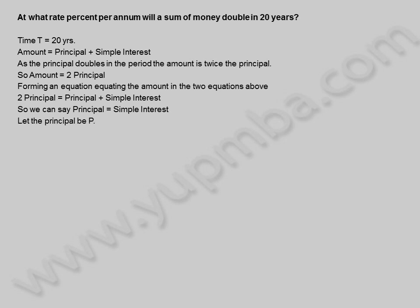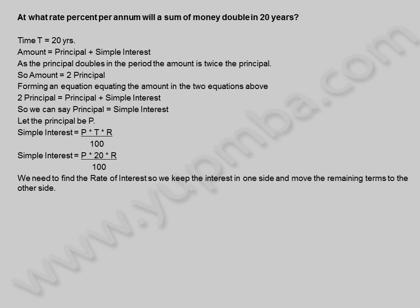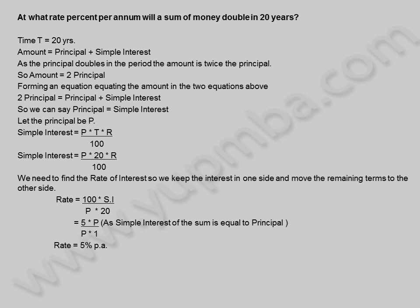Let the principle be P. Simple interest is equal to principle into time into rate percent divided by 100. We need to find the rate of interest, so we keep the interest on one side and move the remaining terms to the other side. Rate is equal to 100 into simple interest divided by principle into 20, which equals 5 into principle divided by principle into 1, since simple interest equals principle. Rate is equal to 5 percent per annum. For a sum of money to double in 20 years, the rate of interest should be 5 percent per annum.